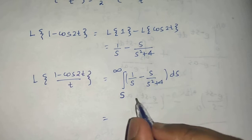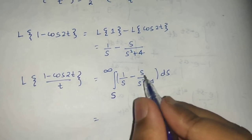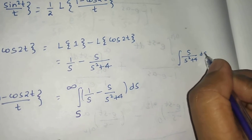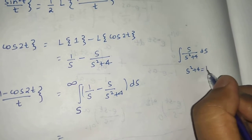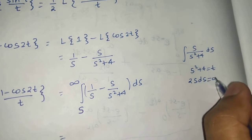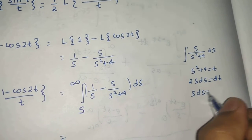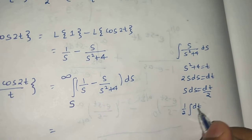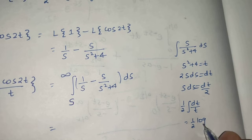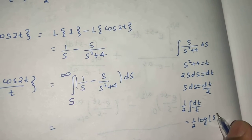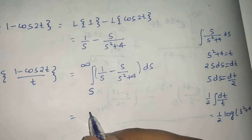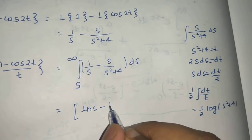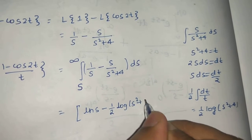For the integral of s/(s² + 4) ds, we can take s² + 4 as a substitution variable t. Then 2s ds becomes dt, or s ds equals dt/2. So the integral converts to one half times dt/t, giving 1/2 log t. Substituting back, t was s² + 4. So on integration: integral of 1/s is ln s, and the integral of s/(s²+4) gives 1/2 log(s² + 4).